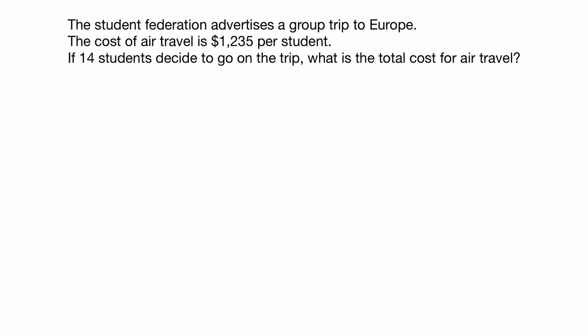So let's pull out that key information. In the second sentence, the cost is $1,235 per student. In the third sentence, we're told that 14 students are going on this trip, and we want to know the total cost. Let's write this information out. We can write this as $1,235 per student. The word per actually means division, so this can be written as per student.